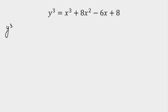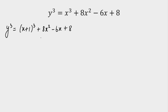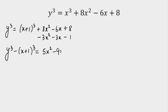The first thing I am going to do is make a perfect cube on the right side, since x³ is already there. So let's make (x+1)³ and write the remaining part 8x² - 6x + 8 as it is. After opening (x+1)³, x³ cancels and I subtract the remaining part: minus 3x² - 3x - 1. Taking (x+1)³ to the other side, we get: y³ - (x+1)³ = 5x² - 9x + 8.